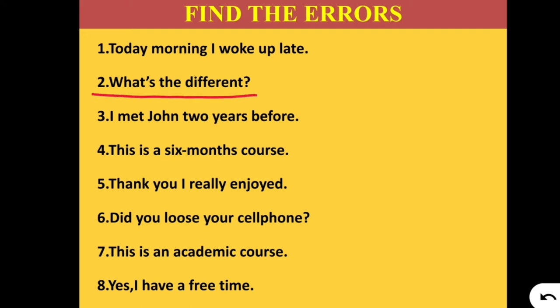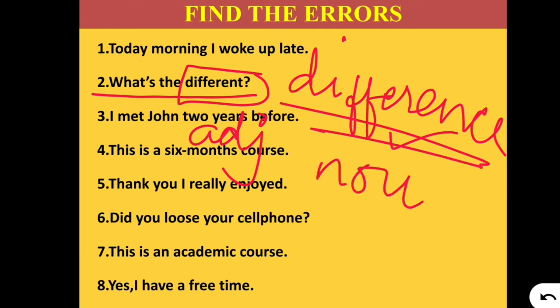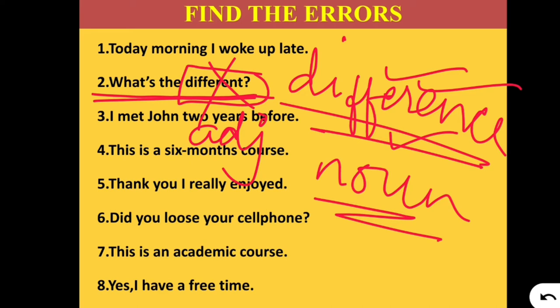Let's move to number 2: 'What's the different?' For those who have a good hold of English, they must be saying it's 'difference,' not 'different.' 'What's the difference?' is correct. The reason is that 'different' is an adjective — a describing word — while 'difference' is a noun. Here in the sentence, we need to use a noun. Therefore, we use 'difference' instead of 'different.'